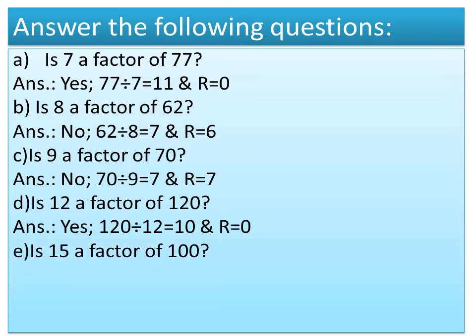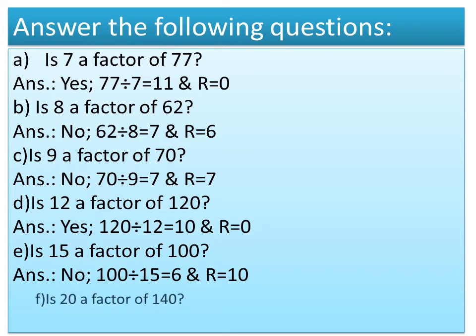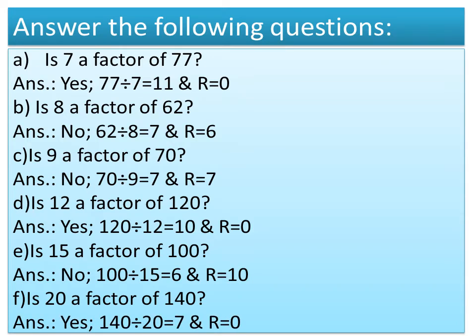Question E: Is 15 a factor of 100? The answer is no, because if we divide 100 by 15, then quotient equals 6 and remainder equals 10. Question F: Is 20 a factor of 140? The answer is yes, because if we divide 140 by 20, then quotient equals 7 and remainder equals 0. If remainder is equal to 0, we can say that 20 is a factor of 140.